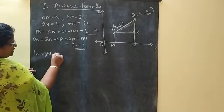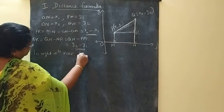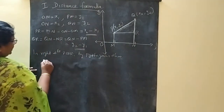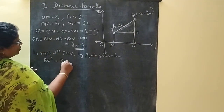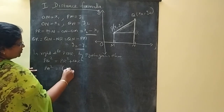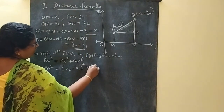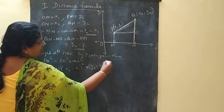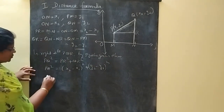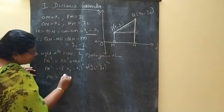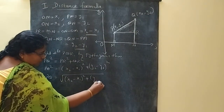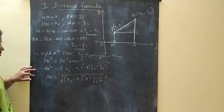In right triangle PQR, by the Pythagoras theorem, PQ² = PR² + QR². Therefore PQ² = (X2 − X1)² + (Y2 − Y1)². Since we want PQ (the distance), we take the square root: PQ = √[(X2 − X1)² + (Y2 − Y1)²].